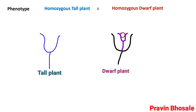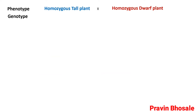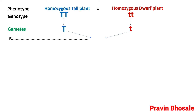So here, homozygous tall plant is crossed with homozygous dwarf plant. Genotype: since it is homozygous tall, it is pure tall, so the genotype will be TT. For the homozygous dwarf plant, the genotype will be tt. Gamete formation gives capital T and small t. On crossing, we get in F1 generation capital T, small t.